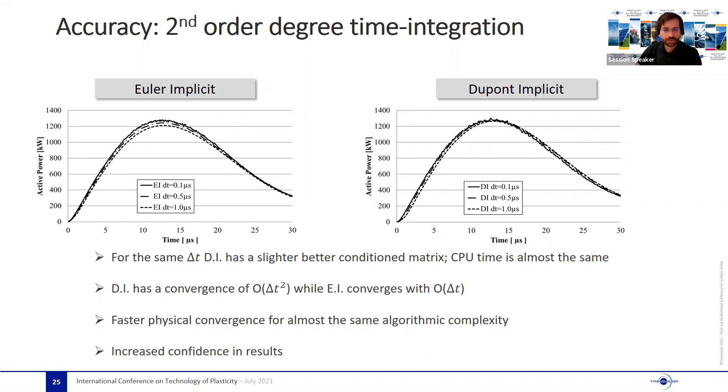Here is a simple example showing for one test case the convergence of the active stored power in the electromagnetic field for different discretization levels of the time step used for solving Maxwell equations. It can be observed that the Dupont implicit methods give almost the same results with a time step of 0.1 microseconds and with 1 microsecond when compared to the Euler implicit in which the difference is more evident. This implies a higher level of trustworthiness in the results even for coarser time steps.